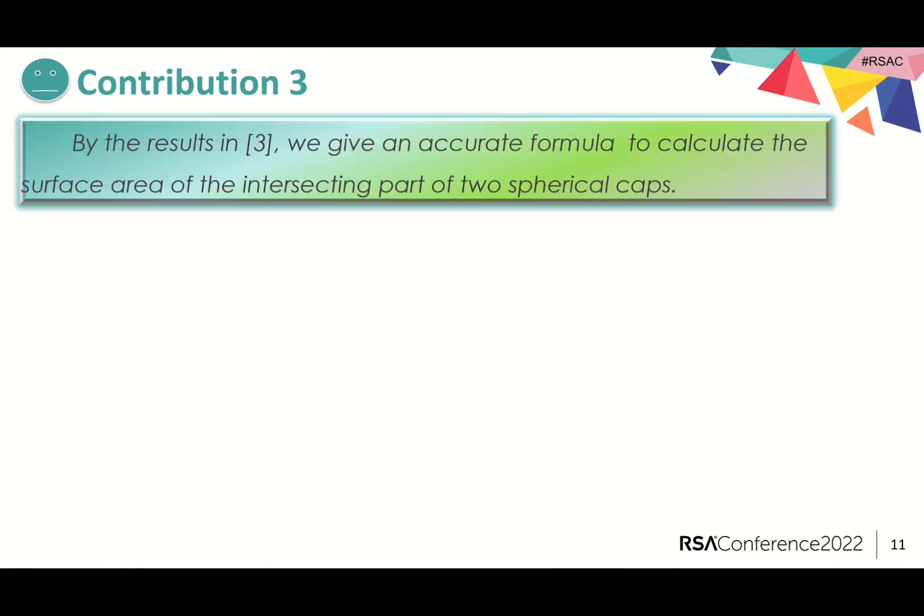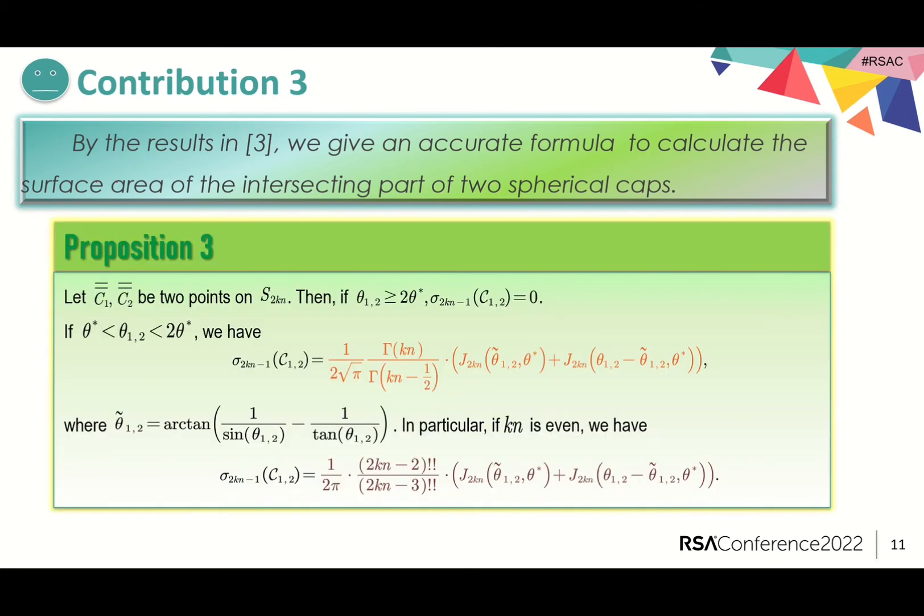Hence, our third contribution is that we give an accurate formula to calculate the surface area of the intersecting part of two caps by the results in a paper from Li et al. We already know from Theorem 2 that the angle is an important indicator for overlaps. If theta is larger than 2 theta star, the two caps are disjoint as the surface area of the intersecting part is zero.